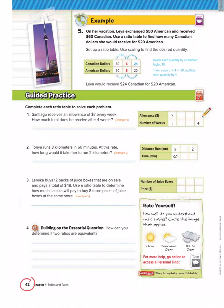Now we're going to go to page 42, and we're going to do some example problems. Number 1 says, Santiago receives an allowance of $7 every week. How much total does he receive after 4 weeks? Complete each ratio table to solve each problem.